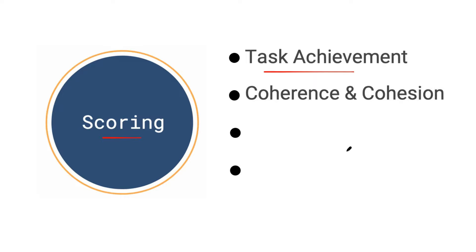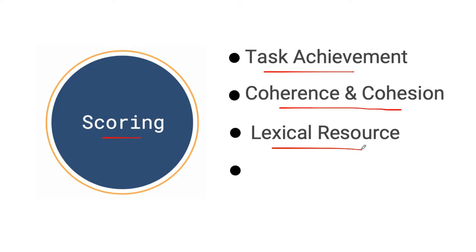The second part is coherence and cohesion. We need to make sure that our writing makes sense and that it is well thought out and planned in a very complete way. The third point is lexical resource, which is something that students find a bit difficult and requires a lot of outside vocabulary preparation. You want to make sure that your essay is virtually error-free when it comes to word choice and grammar, using a wide range of vocabulary in a natural but also very formal tone.